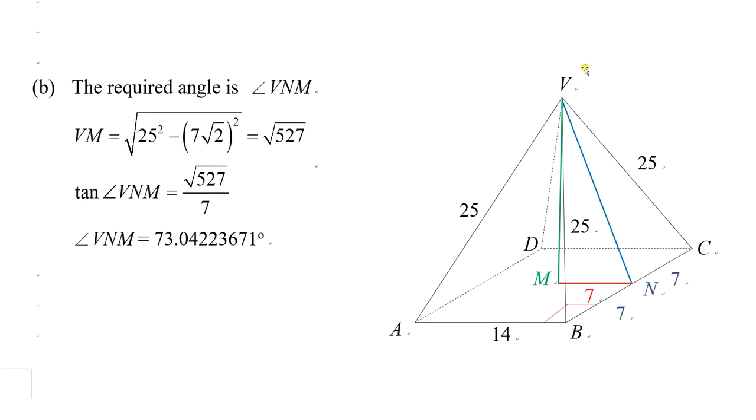In part B, you need to find the angle between the face VBC and the face ABCD. Draw a perpendicular line from V to line BC. That's called N. N is the midpoint of BC because VBC is an isosceles triangle. When VN is perpendicular to BC, VN will bisect BC into two equal parts. That's the property of isosceles triangle. So BN and NC equal 7.